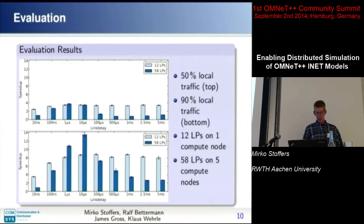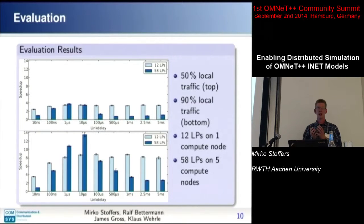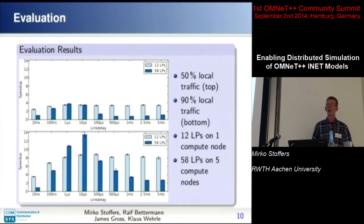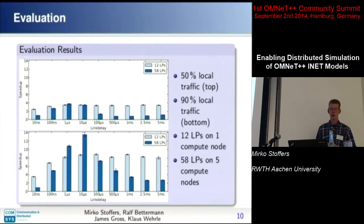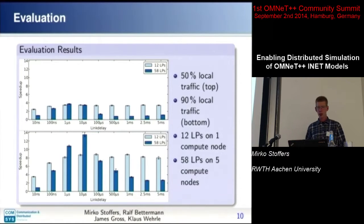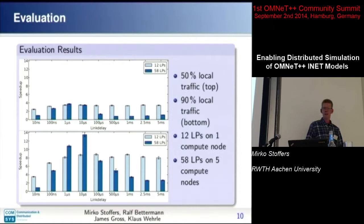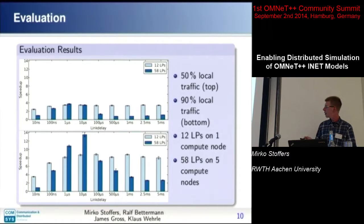We also looked at different traffic patterns: one configuration had 50% local traffic and 50% going through the backbone, and another had 90% local and only 10% through the internet. The parallelization speedup results show that we get higher speedup as we increase the link delay, at least up to about 10 microseconds — the greater the parallelization window, the more speedup. Beyond that point, the speedup doesn't continue to grow and even breaks down.